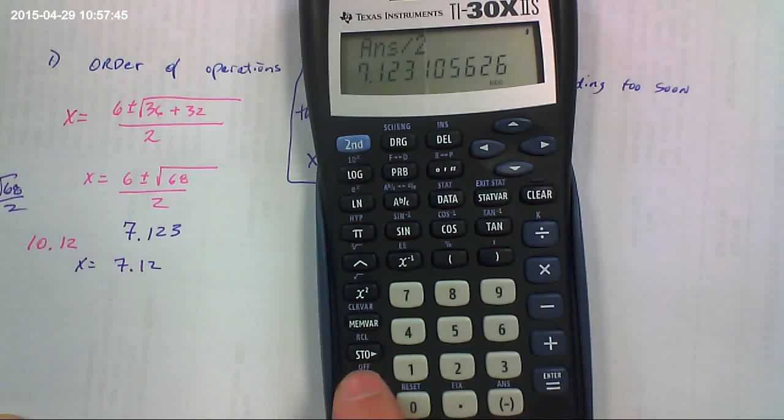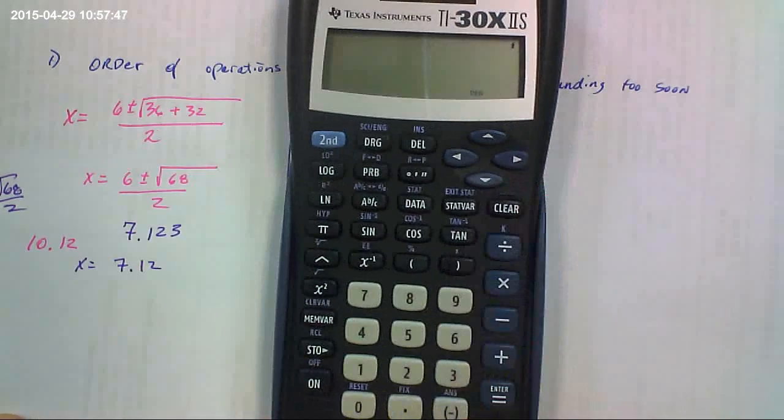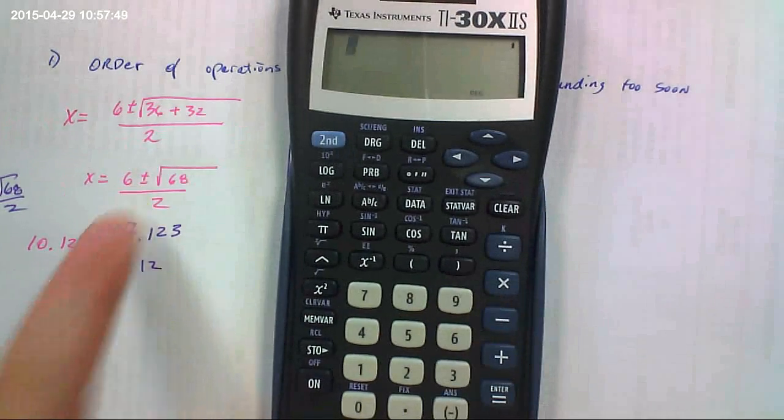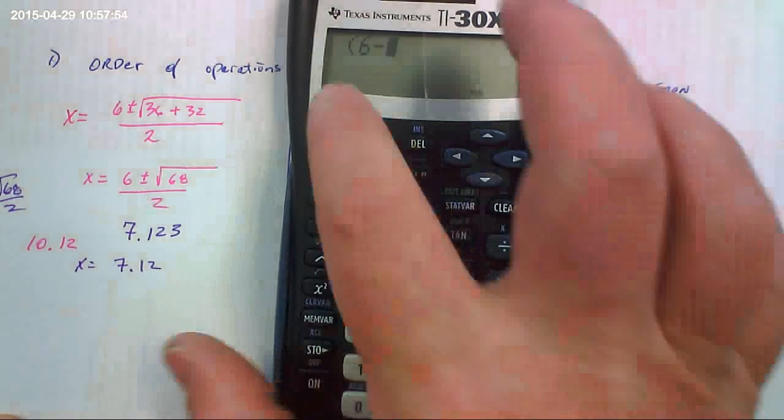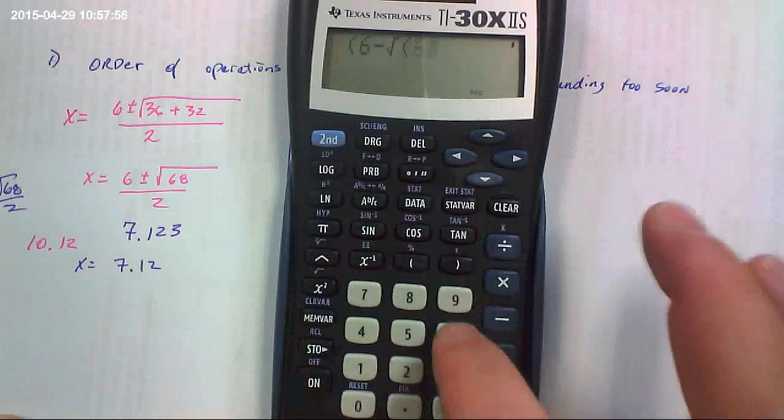Another way you could do it, and I'm going to do that for the other method for the negative part, because you have a plus or minus. The other way you could do it, you could do it with some parentheses to create a group. So 6 minus the square root of 68.